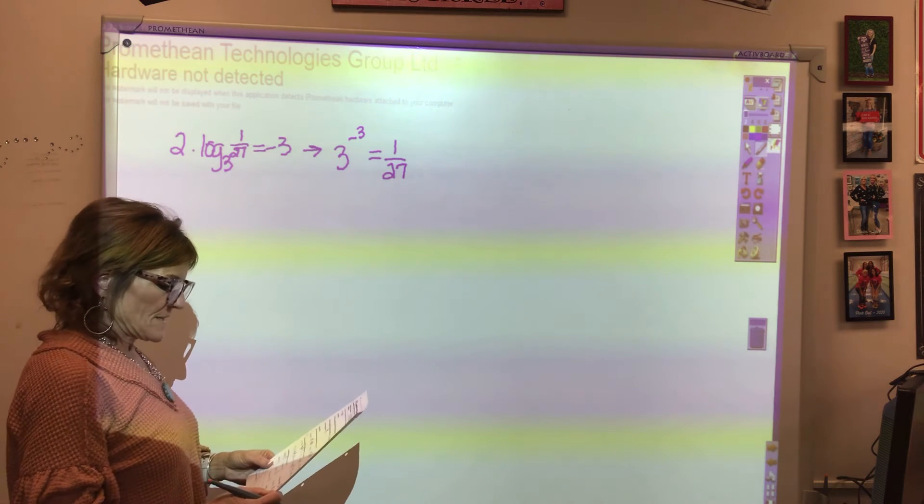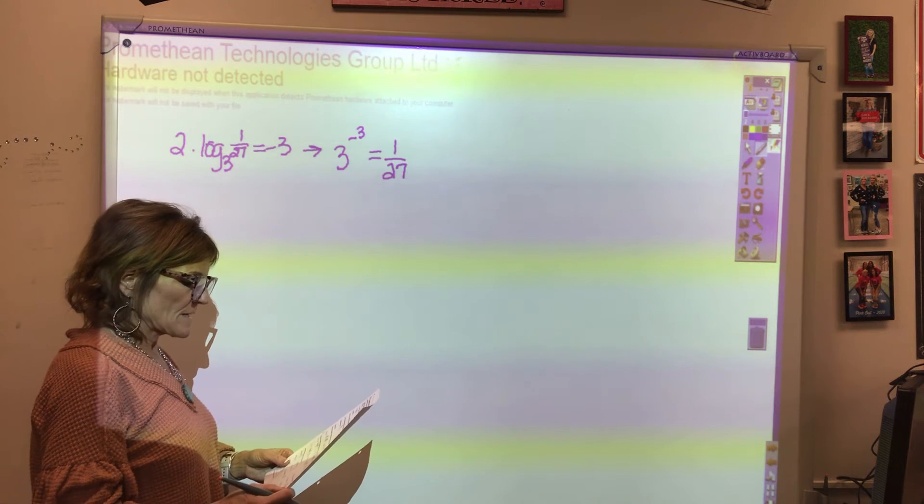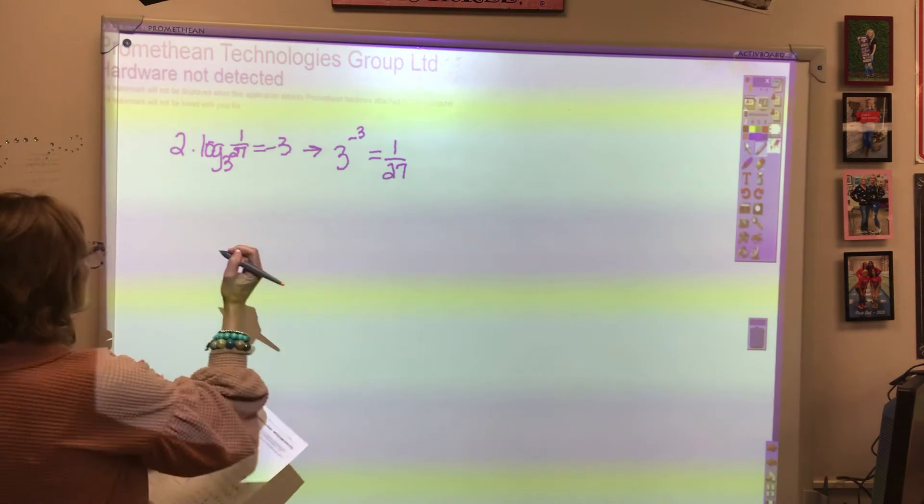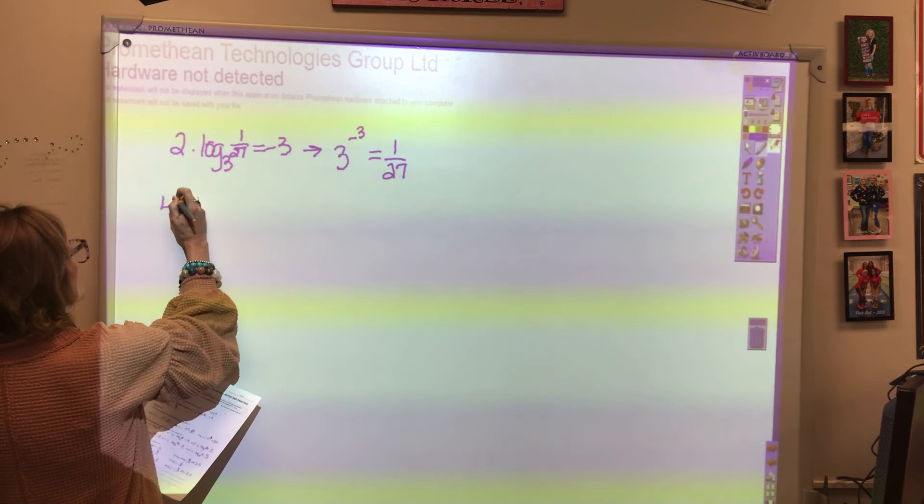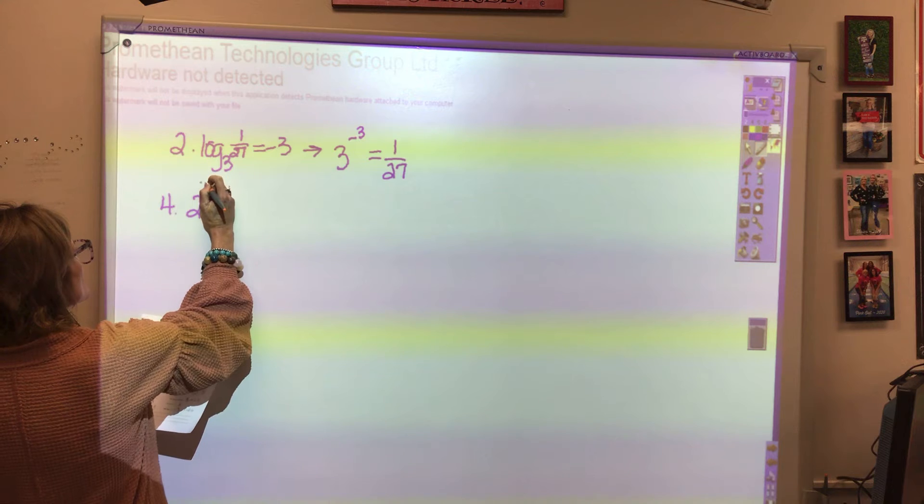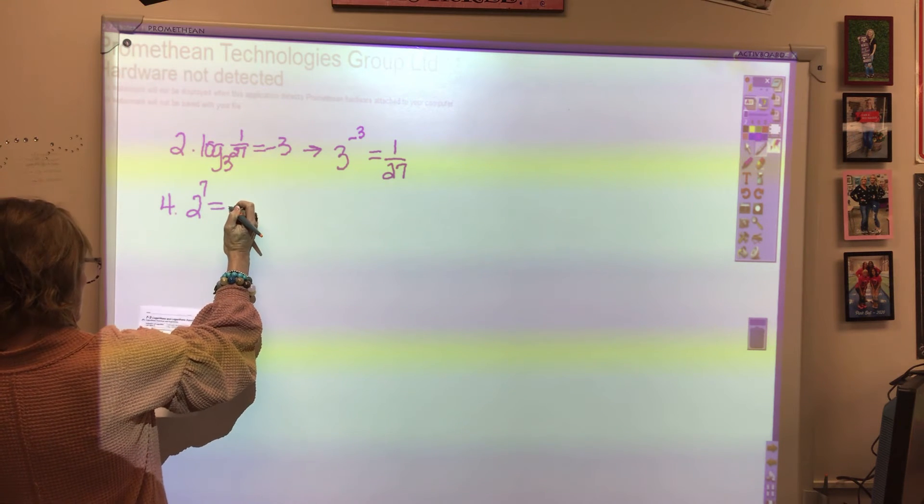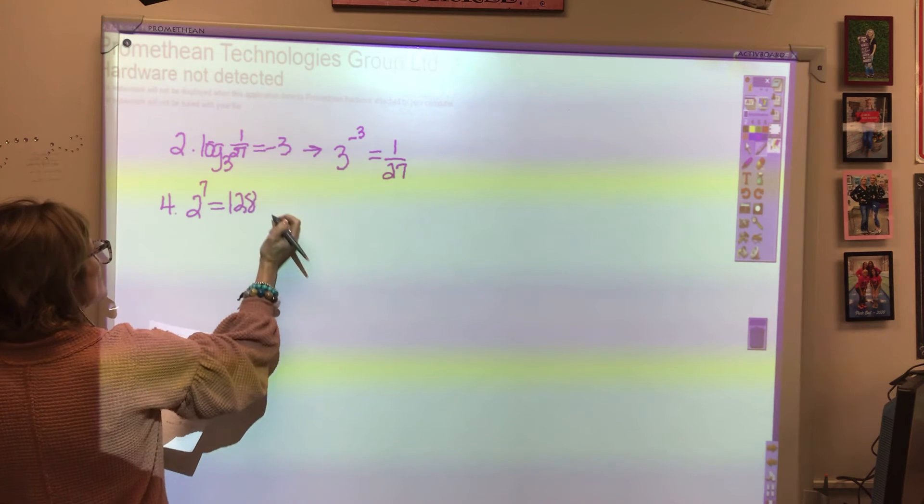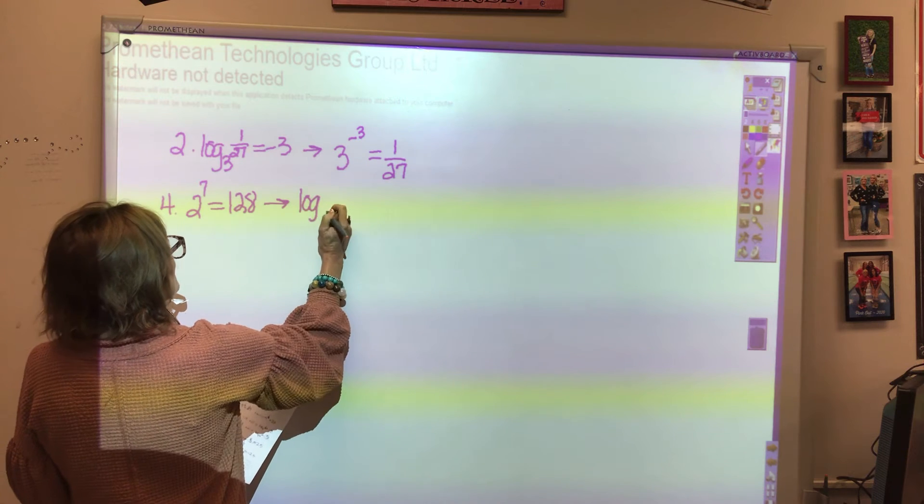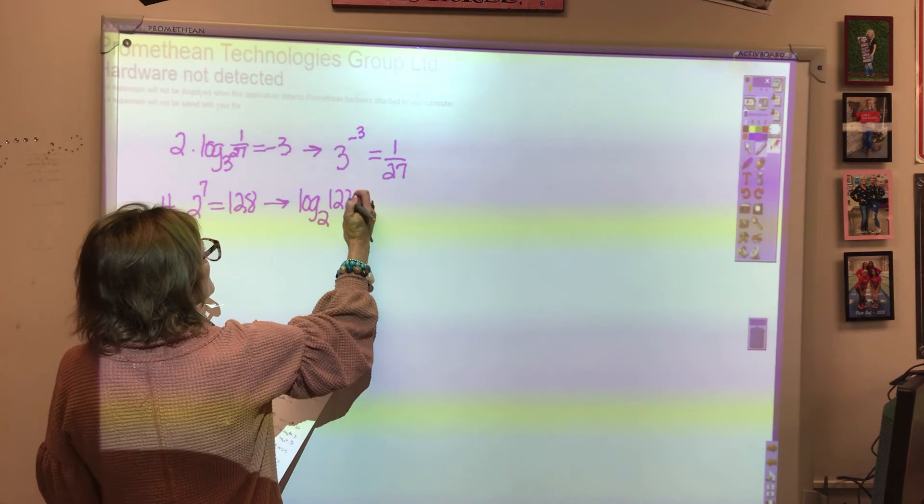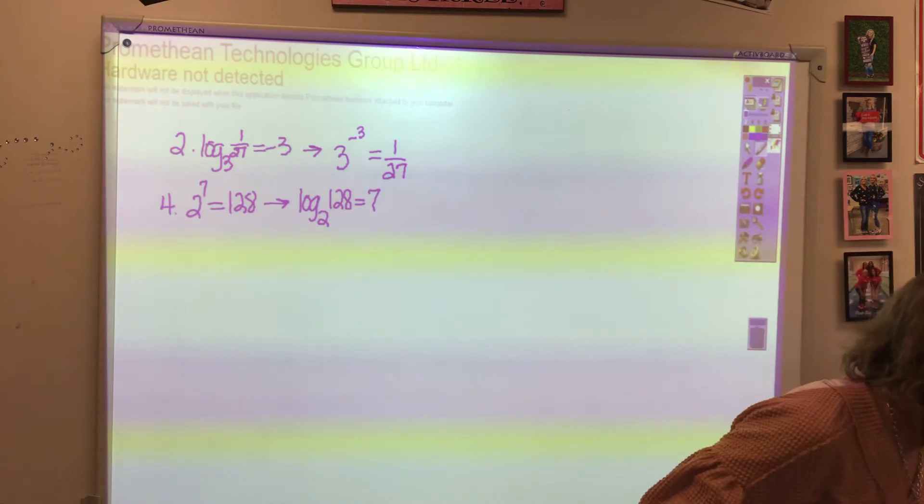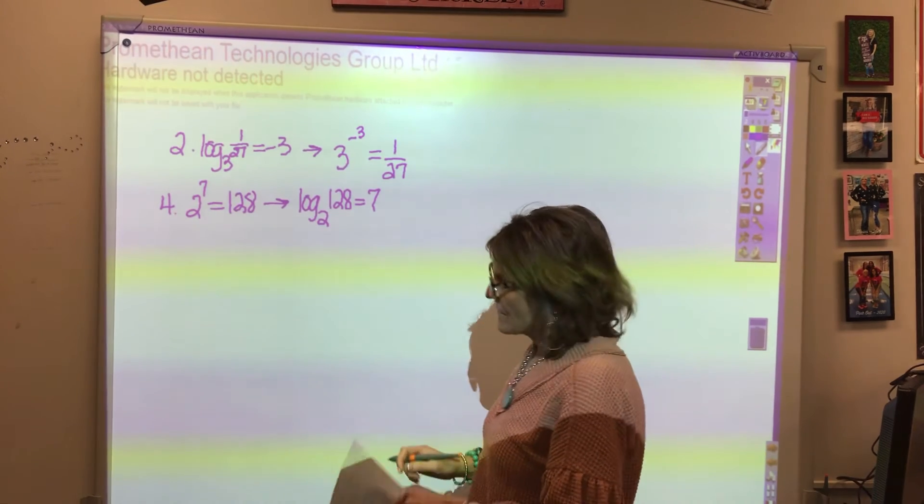Now when we do 4, 6, and 8, we're going to be writing each exponential equation into logarithmic form. So for number four, we have 2 raised to the 7th equals 128. To write this in logarithmic form, we write log base 2 of 128 is equal to 7. Bear with me just a minute, my timer's going off.